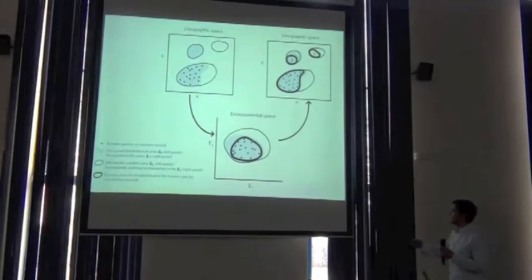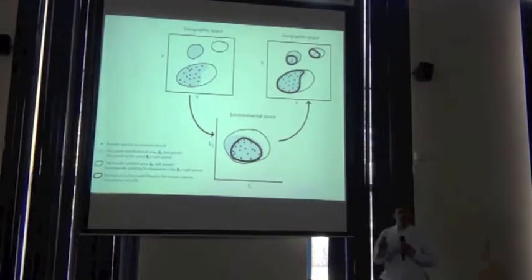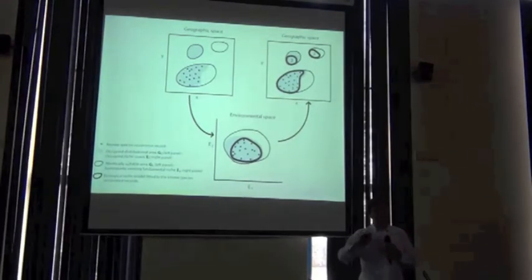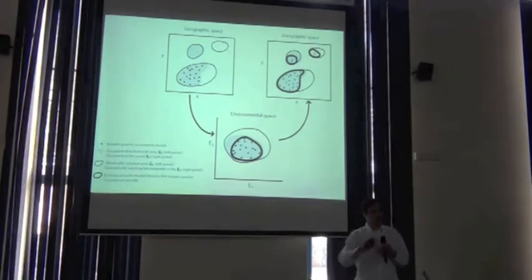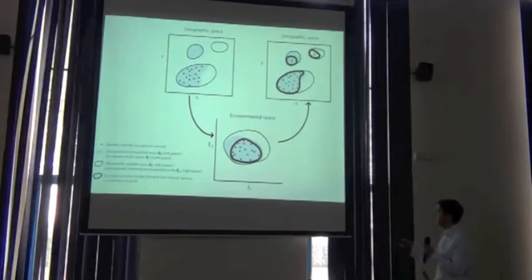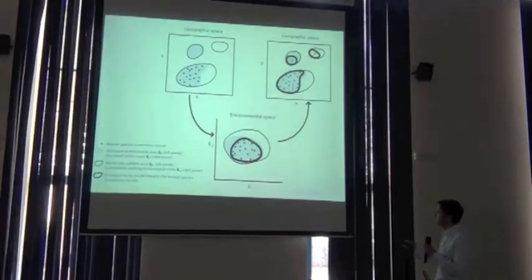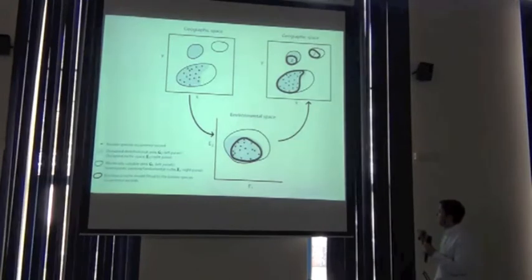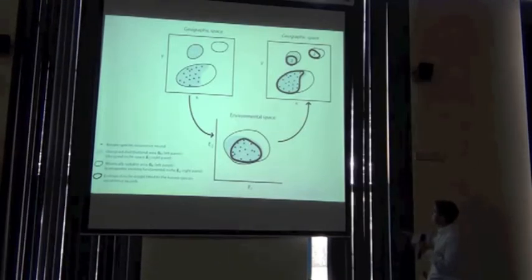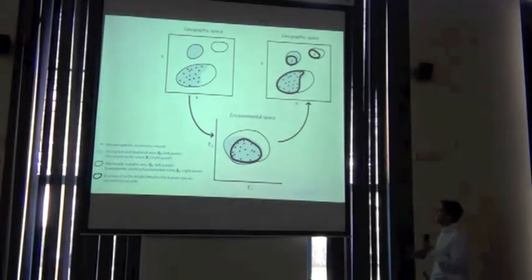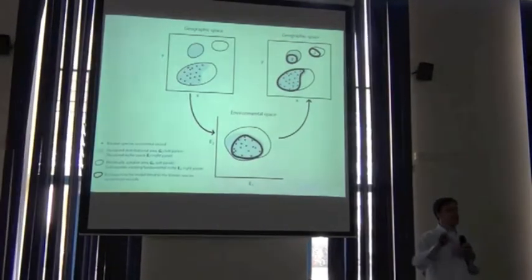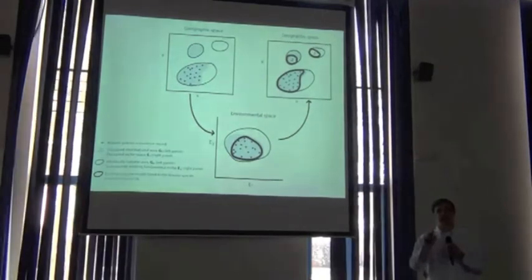What we do is build a model in ecological space — almost always. There are some techniques that start trying to incorporate geographical data as well, but that's not really our focus. We think about ecological niche models as trying to characterize the niche in ecological niche space. Then what we do is project that back into geographic space — we map onto the landscape all those areas that fall within the niche space that the model characterized.